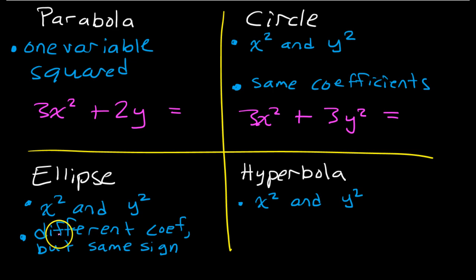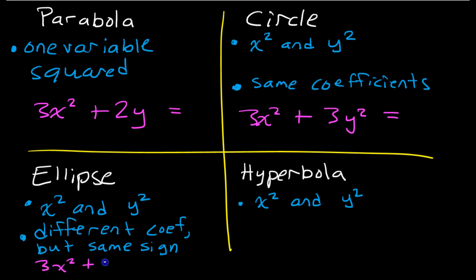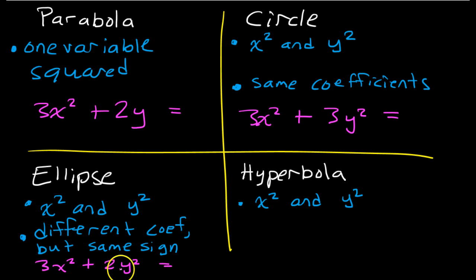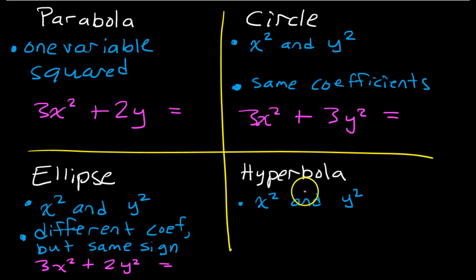For an ellipse, you have different coefficients, but the signs have to be the same. For example, if I had 3x squared and then 2y squared — they're both squared, and the coefficients are different. If these were both threes, it would be a circle, but I have a 3 and a 2, and that's what makes it an ellipse. It's important that they have the same sign — either both positive or both negative. Because if the signs are different, that's going to make it a hyperbola.